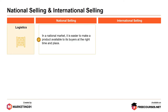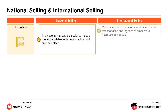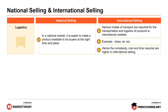Next, logistics. In a national market, it is easier to make a product available to its buyers at the right time and the right place. Whereas, various modes of transport are required for the transportation or logistics of a product to international markets — for example, ship, transport, air transport, etc. Hence the complexity, cost, and time required are higher in international selling.